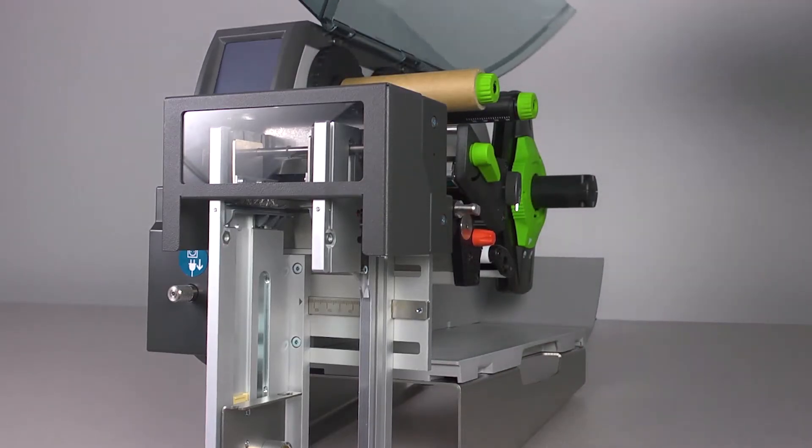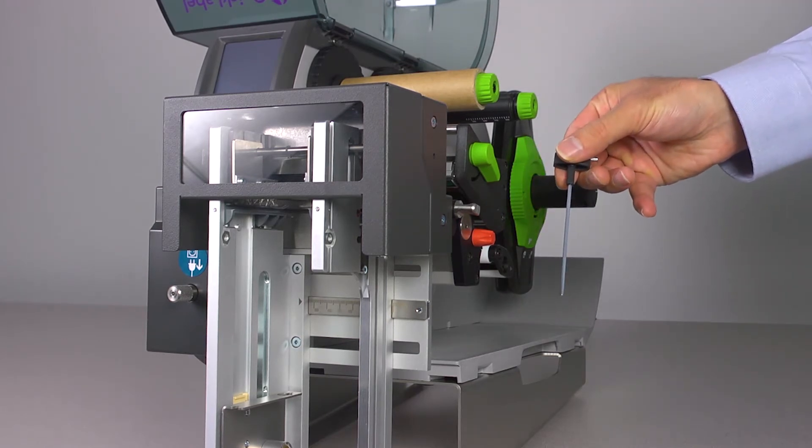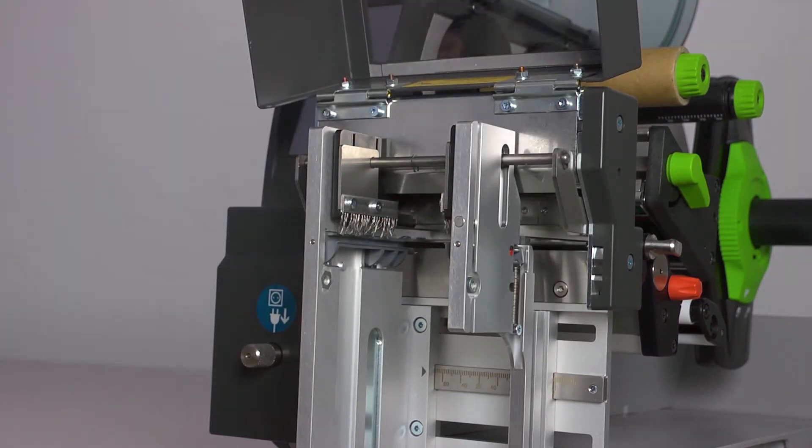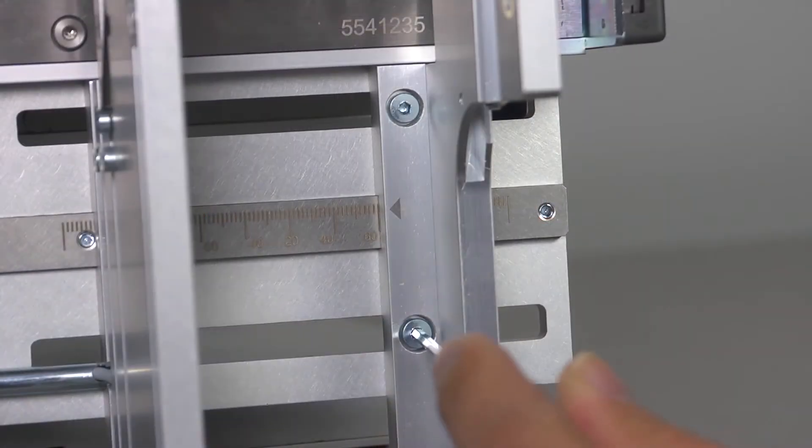Open the printer's cover and remove the included Allen key. Start by opening the cover on the cutter stacker. Loosen the four screws to adjust both side plates on the cutter stacker. It will take about two or three turns to loosen the screws.